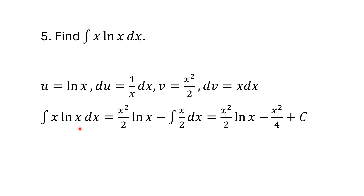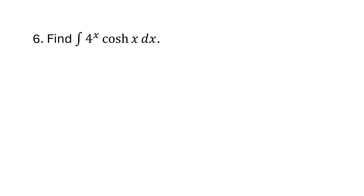The integral of x·ln(x) equals u·v = (x²/2)·ln(x), minus the integral of (x²/2)·(1/x) dx, which simplifies to the integral of x/2 dx. Integrating x/2, the integral of x is x²/2, so we get x²/2·ln(x) minus x²/4 plus C.